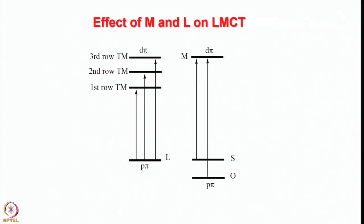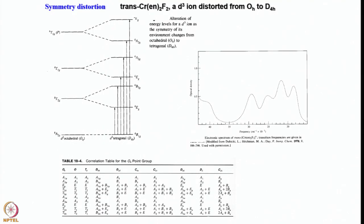Ligand-to-metal charge transfer transitions have very large extinction coefficients. You can see here how metal and ligand presence impact ligand-to-metal charge transfer transition. First row, second row, and third row, how it varies - it increases steadily. You go from 3d to 4d to 5d, the gap increases and the energy required is very high, or it falls into lower wavelength. Now symmetry distortion: trans-diethylene-difluoro compound, d3 ion distorted from octahedral to D4h tetragonal elongation. In tetragonal elongation, energy level of d3 ion changes as symmetry changes from octahedral to tetragonal. You can see these different transitions because of the change in point group from Oh to D4h here.